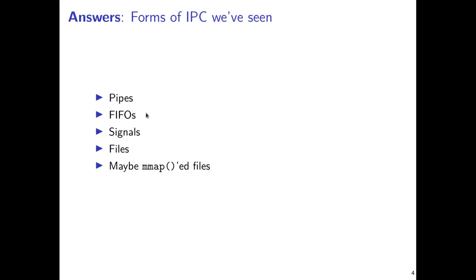We saw an early form of IPC in the form of pipes. This showed up in our first project where a parent process was able to communicate with a child process by opening a pipe, forking off a child, and having the child write into that pipe. The parent could then get data of an arbitrary form from the child. The important restriction is that those two processes had to be directly related — parent and child. With a little more work, a parent can set up two children that talk to each other through a pipe, but generally pipes require processes that are very closely related in the process hierarchy.